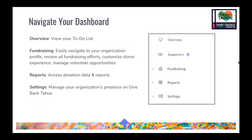Something that's been updated since last year is your organization dashboard, located on your organization profile. This is where you'll have access to all your key reporting and managing tools for your nonprofit. It's broken down into key areas: overview, fundraising, reports, and settings. For a more comprehensive breakdown, check out the first webinar we did about getting started for Give Back Tahoe.